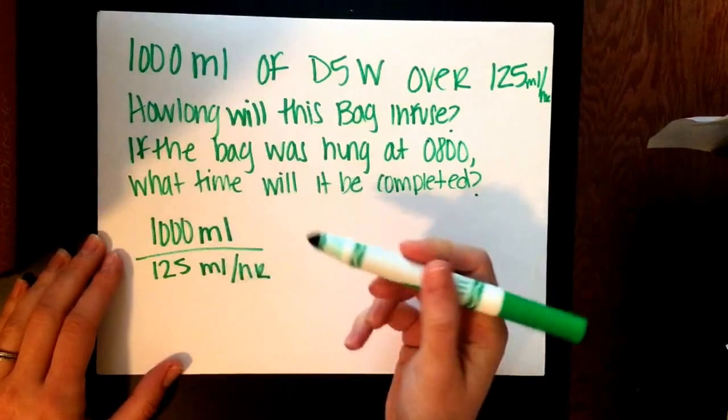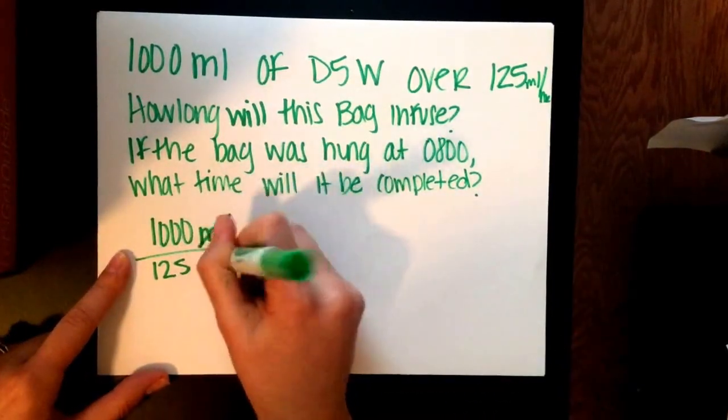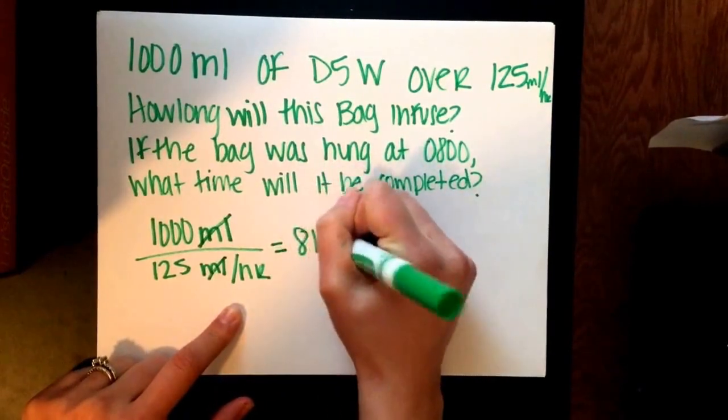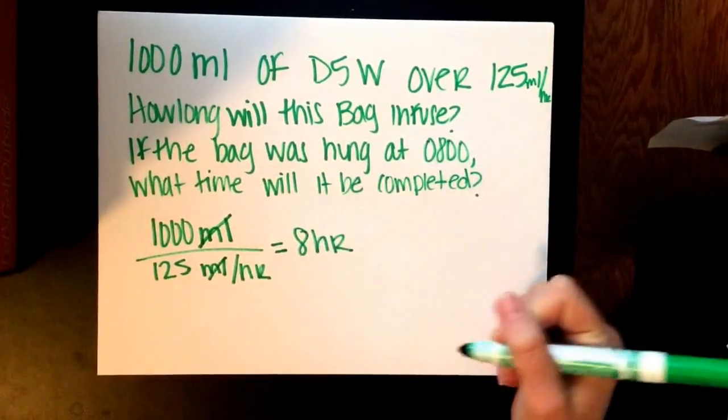All you have to do is divide the milliliters by milliliters per hour. When you do the math, milliliters cancel and you're left with the hour. So it will infuse for 8 hours.